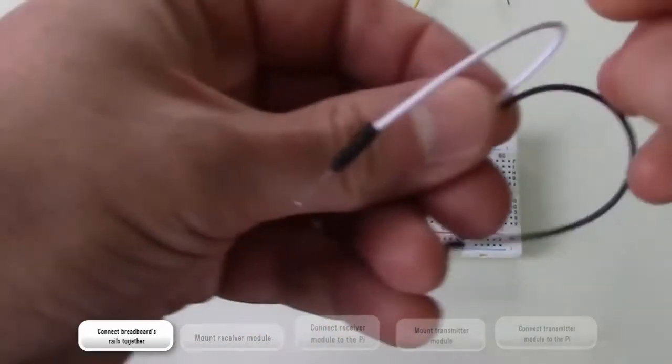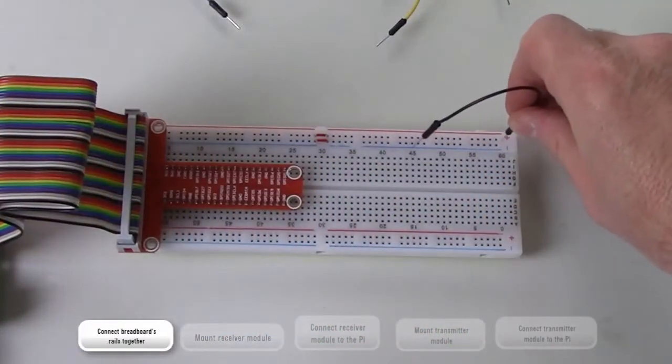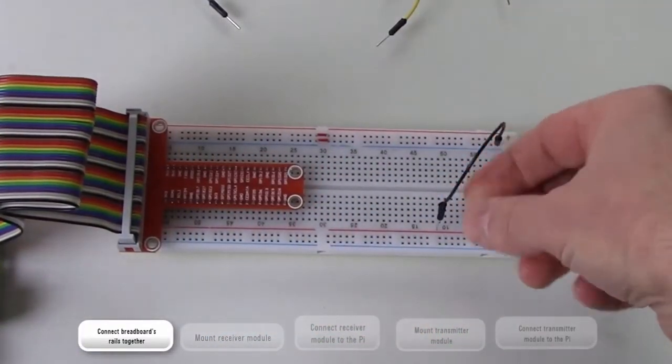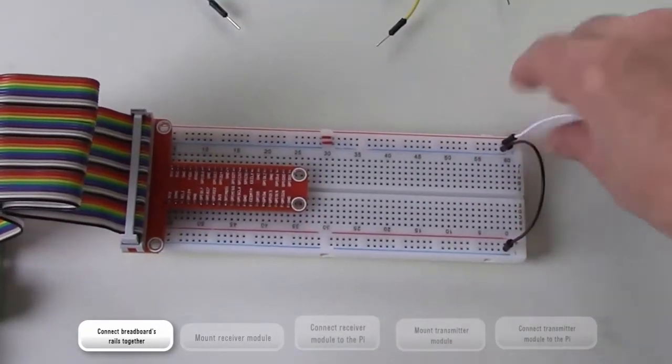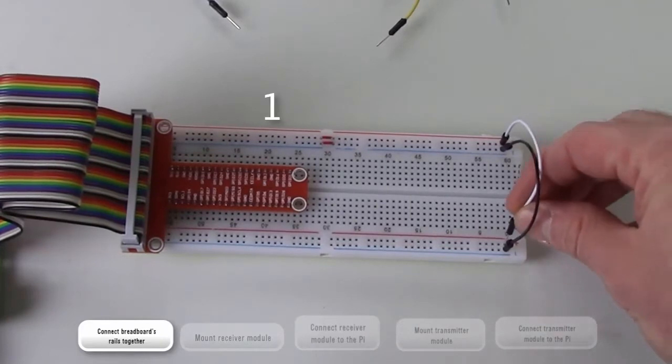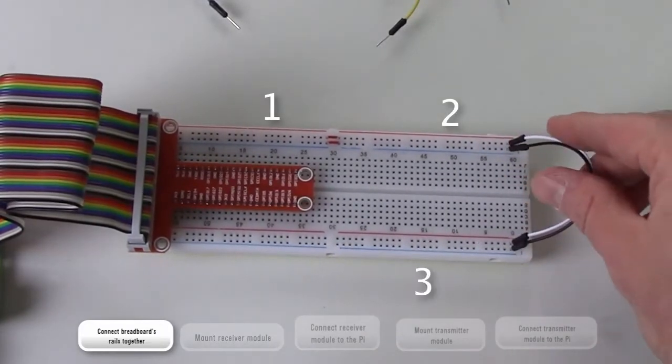Now connect groups 2 and 3, which are on opposite sides of the board. And now groups 1, 2, and 3 are connected.